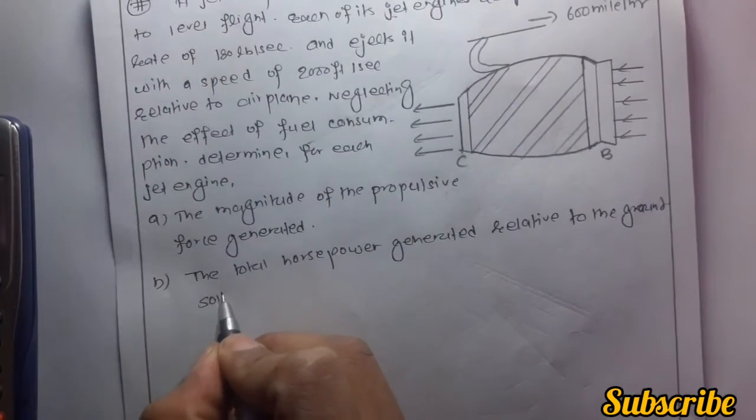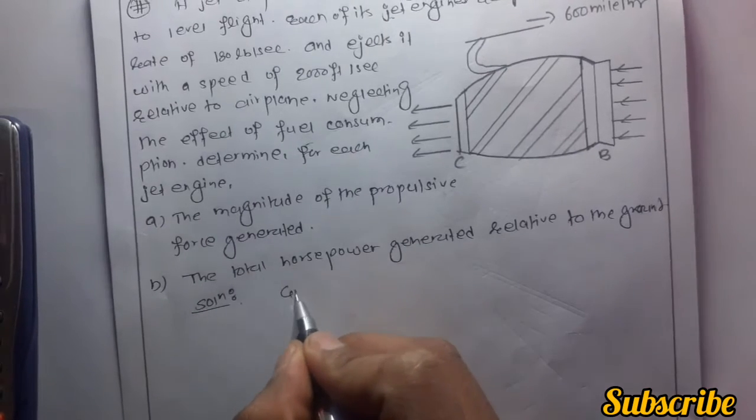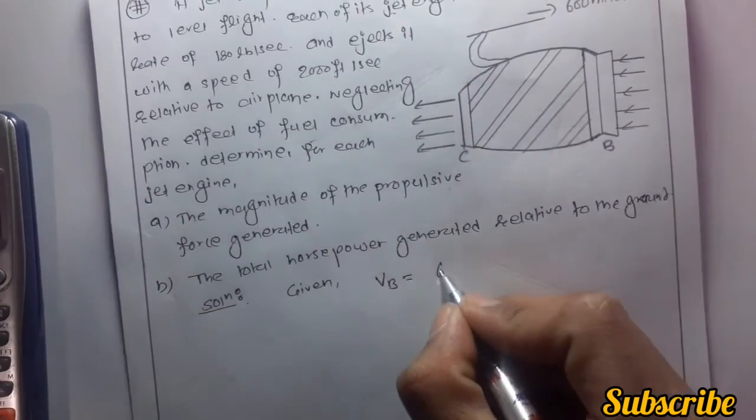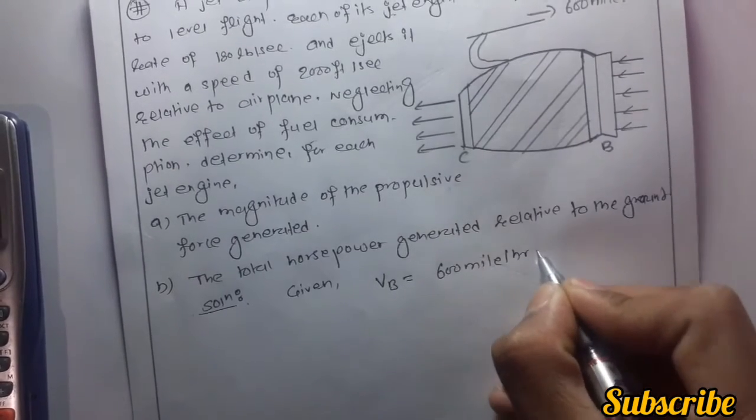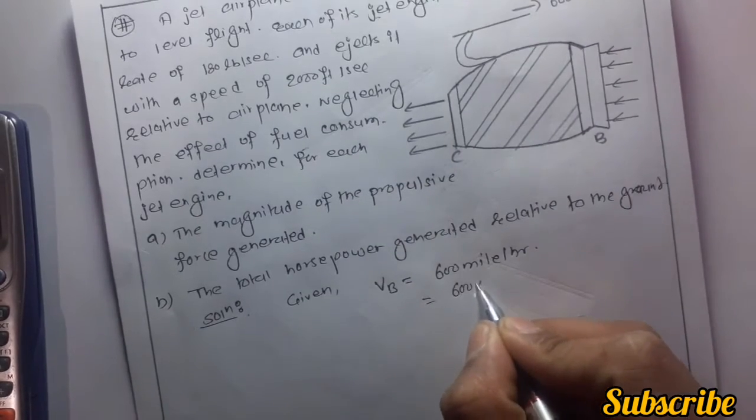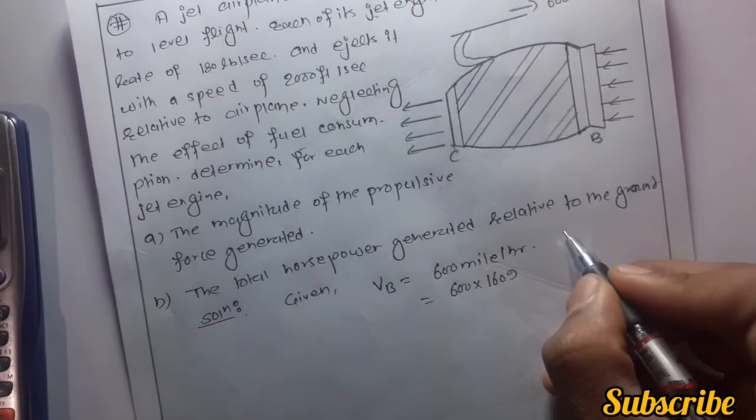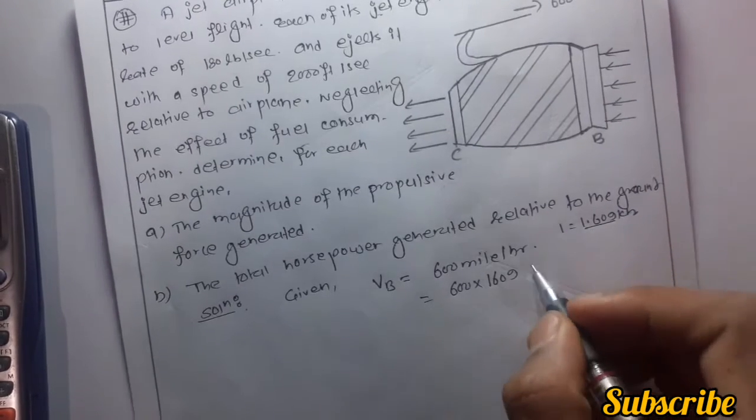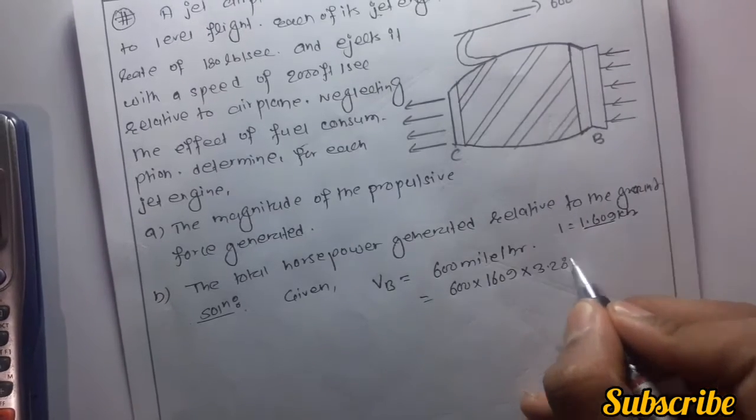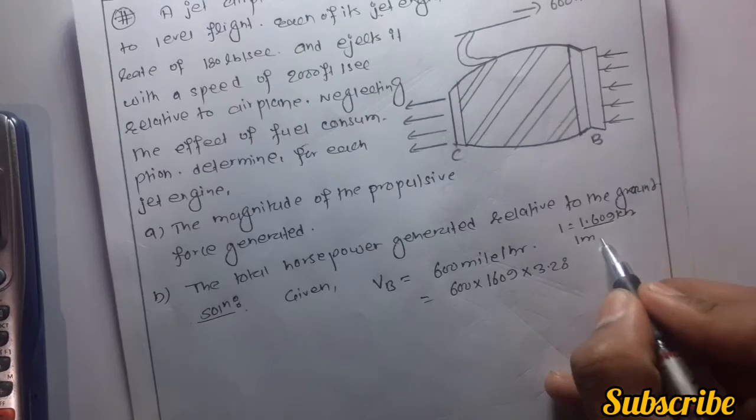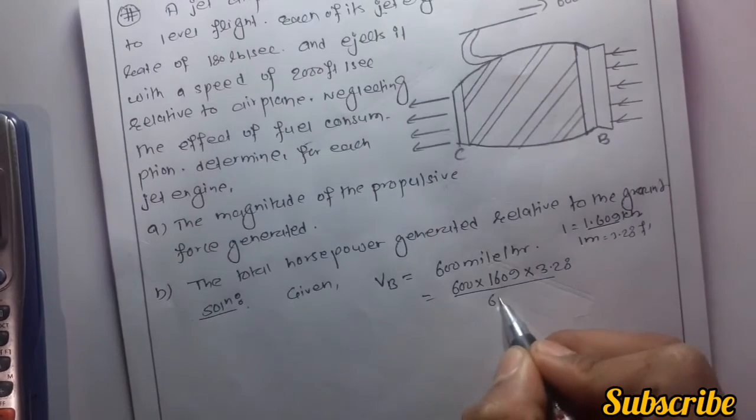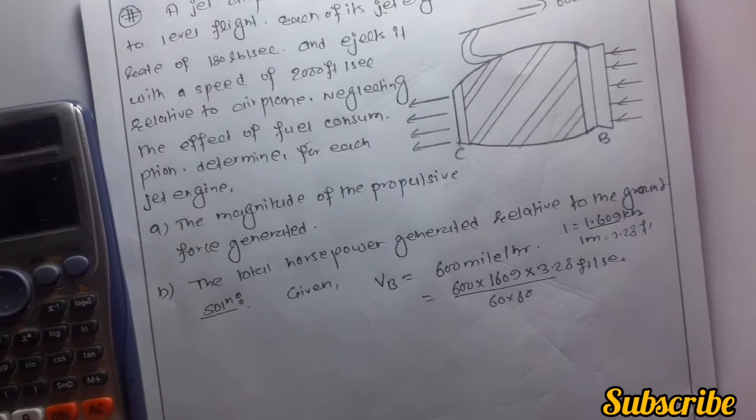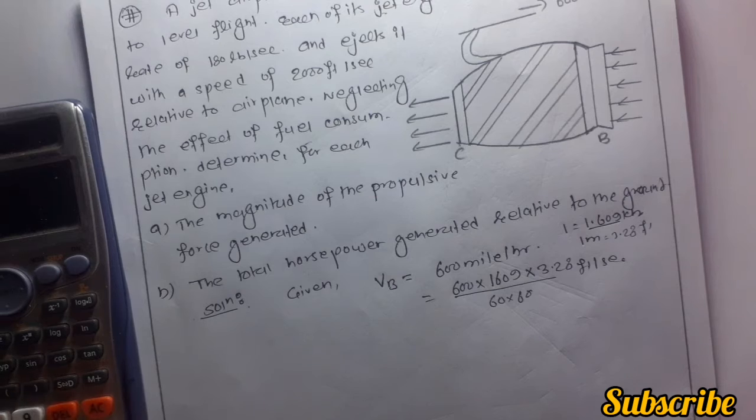Solution: First, given VB is equal to 600 mph. Changing it into feet per second: 600 times 1609 (because in 1 mile there is 1.609 km), changing it into meters becomes 1609 times 3.28 (in 1 meter 3.28 feet) upon 60 times 60 feet per second.